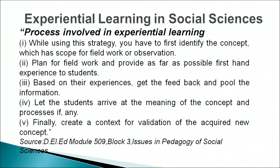When using this strategy, you must first identify the concept which has scope for fieldwork or observation, then plan for fieldwork and provide first-hand experience to students. Thirdly, based on their experiences, get feedback and pool the information. Let the students arrive at the meaning of the concept and processes. Finally, create a context for validation of the acquired new concept. Based on their experiences — through a reflective journal or group brainstorming — discuss what exactly the concept means for them now and how the concept has changed through the experience. Once experiences have been undertaken, learners should discuss them thoroughly so that learning takes place.